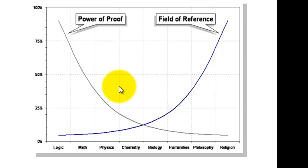In other words, the power of proof declines dramatically when we go from logic to math, from math to physics, from physics to chemistry, from chemistry to biology, not to mention humanities, philosophy and religion. But there is also an upward curve. The field of reference becomes larger and larger and larger.